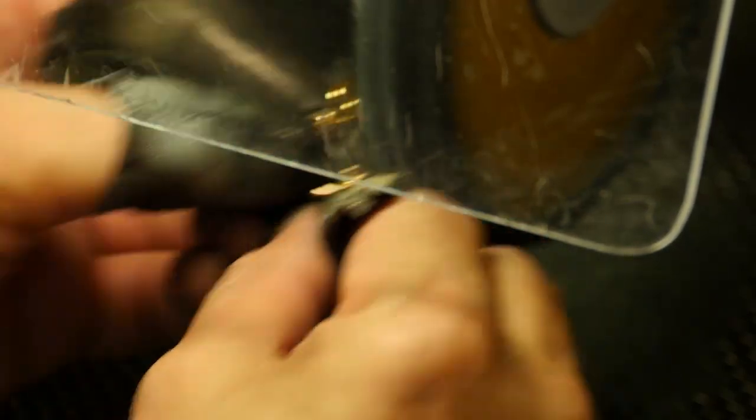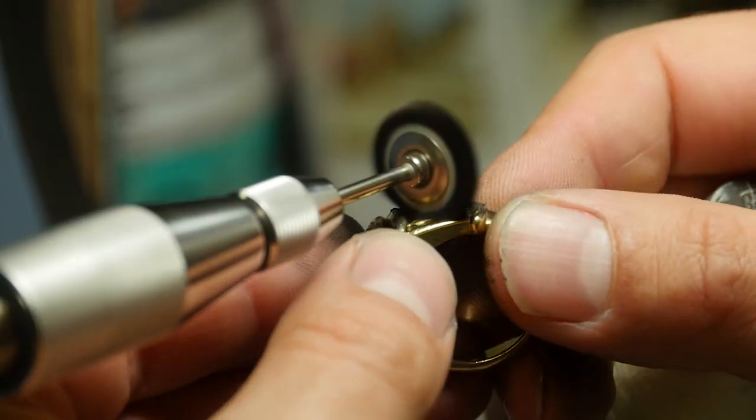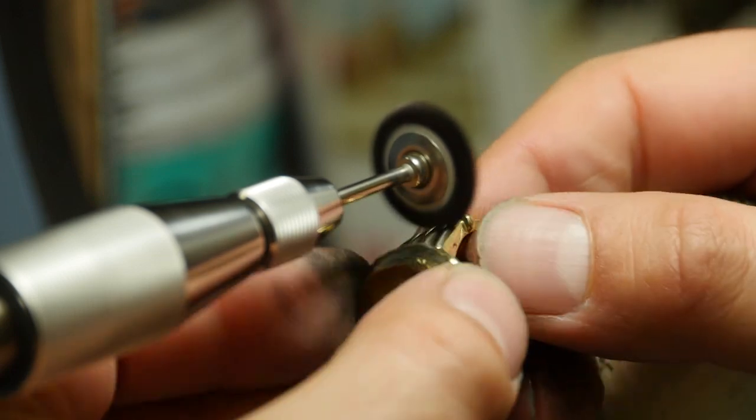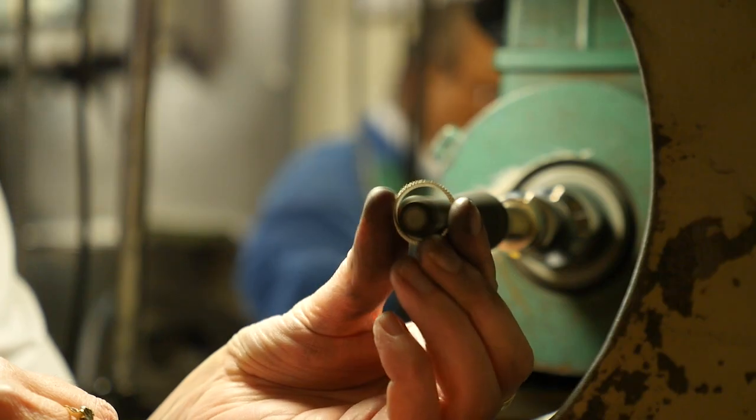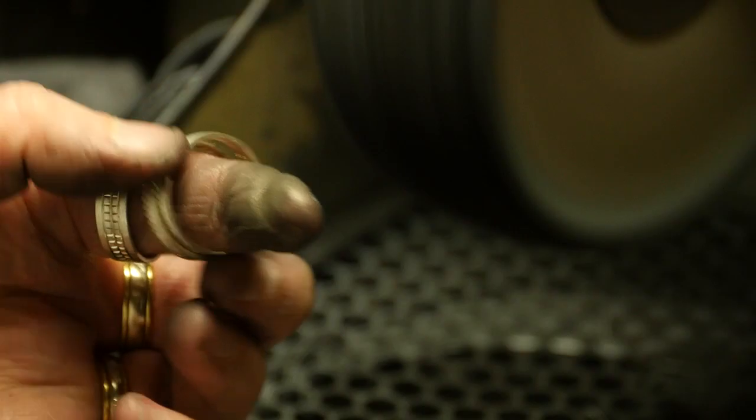Le polisseur donne la vie au métal précieux en lui apportant le brillant, l'éclat, le reflet, la lumière.